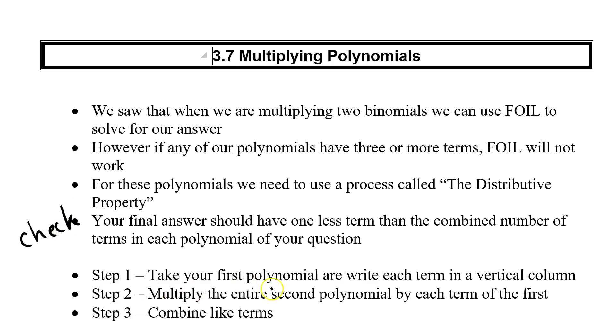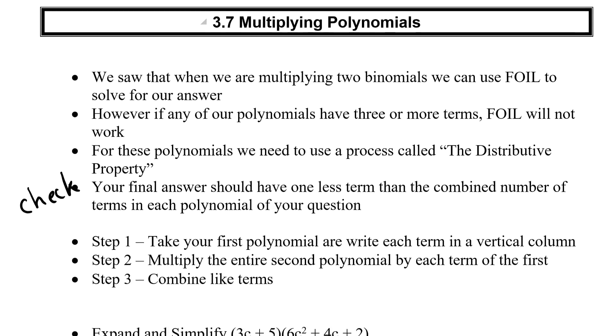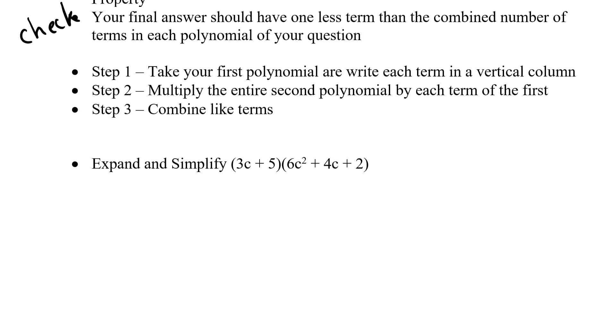So what do we do? Step one, we take our first polynomial and write it in a vertical column. Of course vertical means going up and down. Then you're going to multiply the entire second polynomial by each term of the first. And that's kind of why I wrote it in a vertical column. And then in the end, we have to combine our terms. So let's take a look at this.